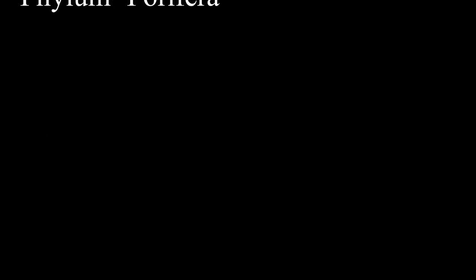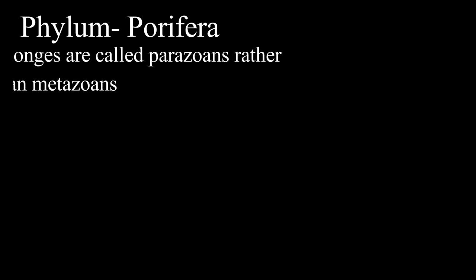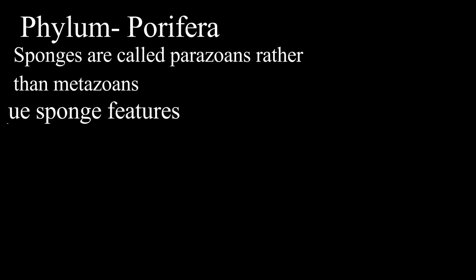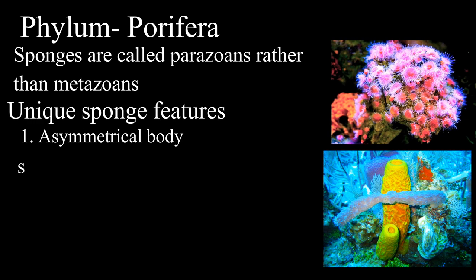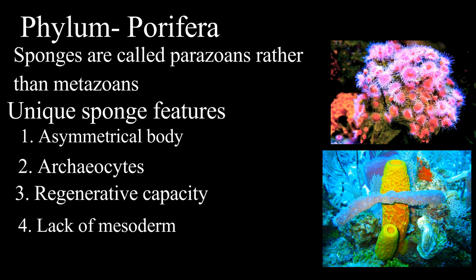Phylum Porifera includes sponges that differ so much in their development from other animals that they are considered as parazoa rather than metazoa. Some of the unique developmental differences include: they are asymmetrical, they show presence of archaeocytes that give rise to all other cell types, they show specific aggregation of cells to form new sponges, and there is absence of mesoderm.